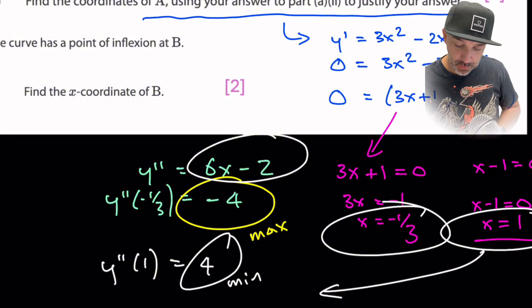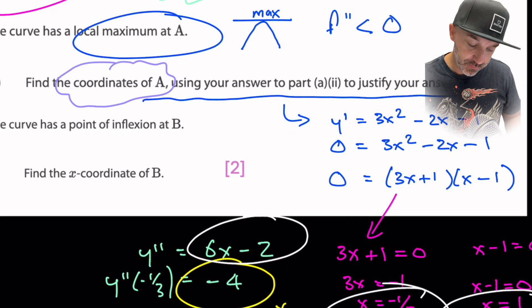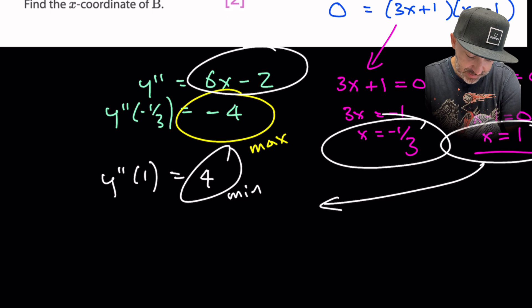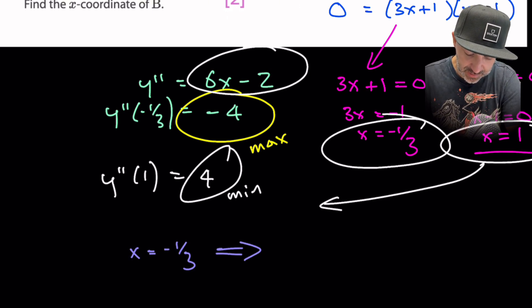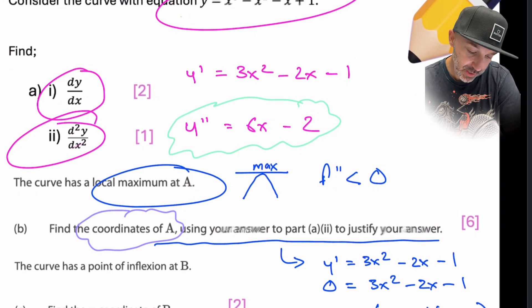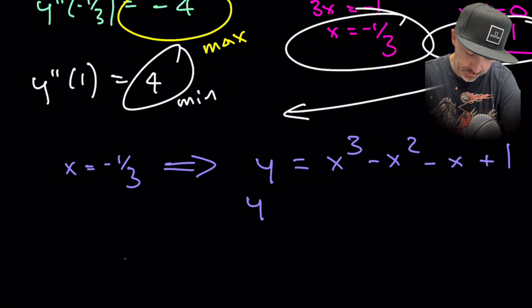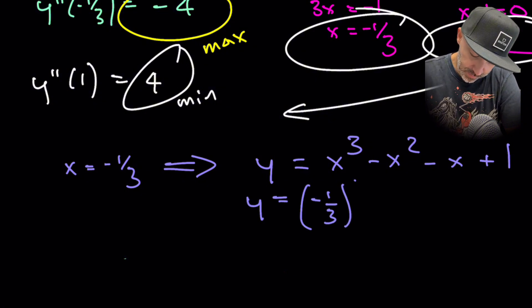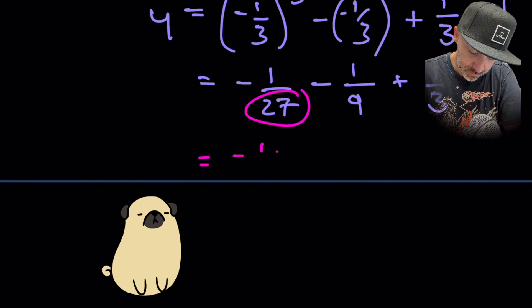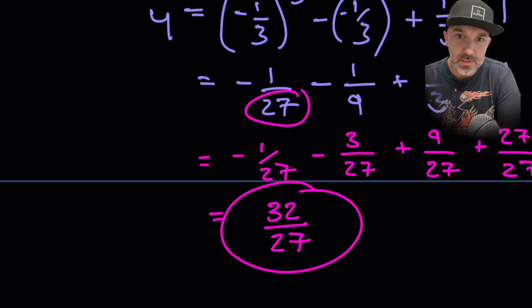We are interested in x = -1/3 for the maximum point A. To find the coordinates, substitute x = -1/3 into the original expression y = x³ - x² - x + 1, and calculate the corresponding y value to get the full coordinates of point A.